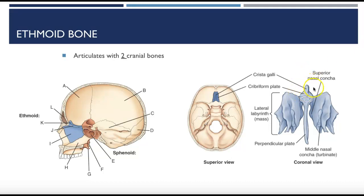The crista galli projects superiorly from the cribriform plate — derived from the meaning 'rooster comb.' The perpendicular plate is the major portion of the ethmoid bone lying beneath the floor of the cranium; it projects downward in the midline to help form the bony septum. The lateral labyrinths are suspended from the undersurface of the cribriform plate on each side and contain ethmoid air cells, helping form the medial walls of the orbit and lateral walls of the nasal cavity. The superior and middle nasal conchae (turbinates) extend medially and downward from the medial wall of each labyrinth as thin scroll-like projections.